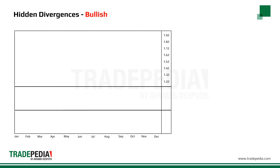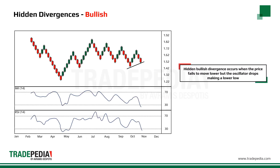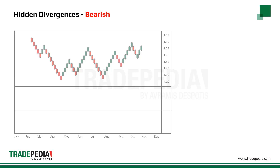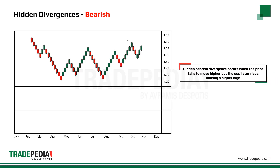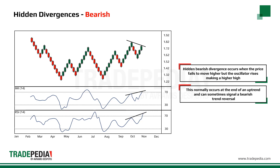How to spot hidden divergences. Hidden bullish divergence occurs when the price fails to move lower but the oscillator drops, making a lower low. This normally occurs at the end of a downtrend and can sometimes signal a bullish trend reversal. A hidden bearish divergence occurs when the price fails to move higher but the oscillator rises, making a higher high. This normally occurs at the end of an uptrend and can sometimes signal a bearish trend reversal.